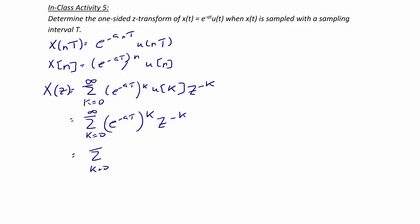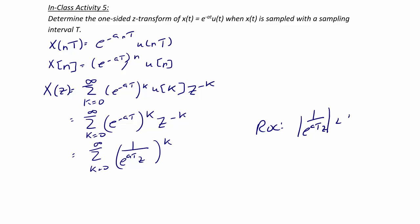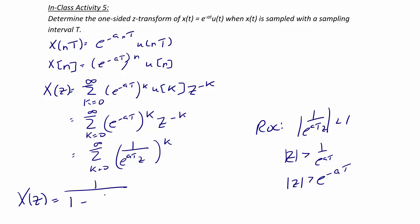This can be rewritten as the summation from K equals zero to infinity of one over E to the A T times Z, raised to the K. The region of convergence requires the magnitude of one over E to the A T times Z to be less than one, or Z greater than one over E to the A T, which can be written as Z greater than E to the negative A T. Finally, X of Z equals one over one minus one over E to the A T times Z, which simplifies to Z over Z minus E to the negative A T.